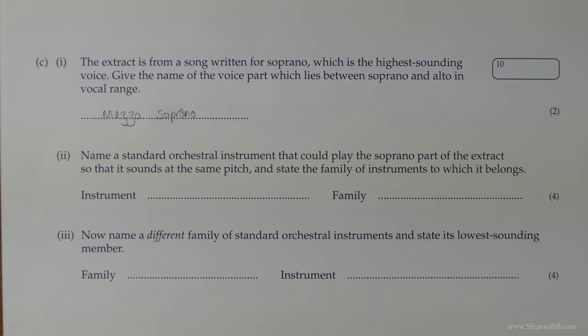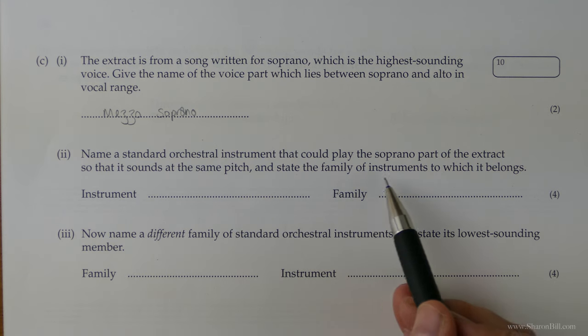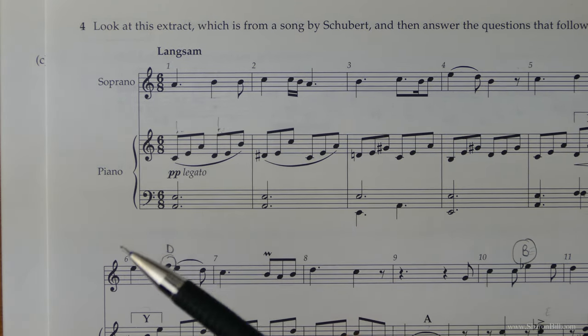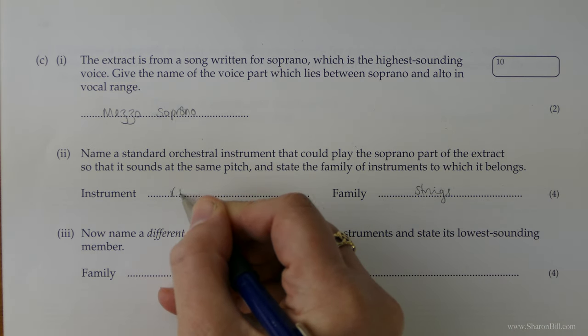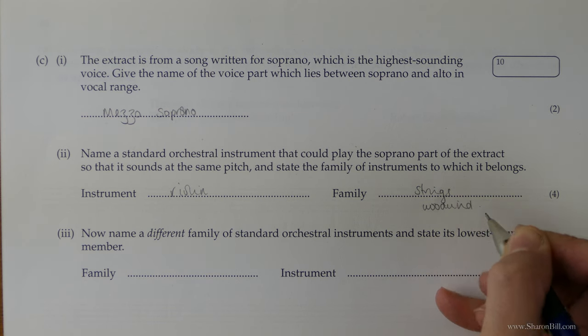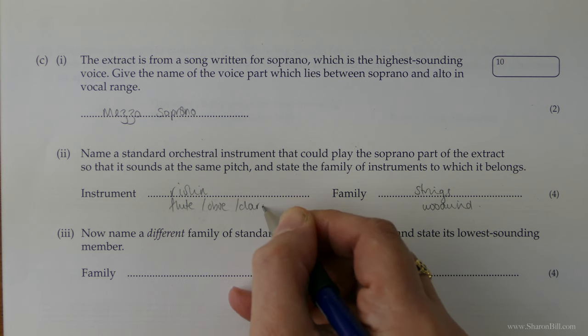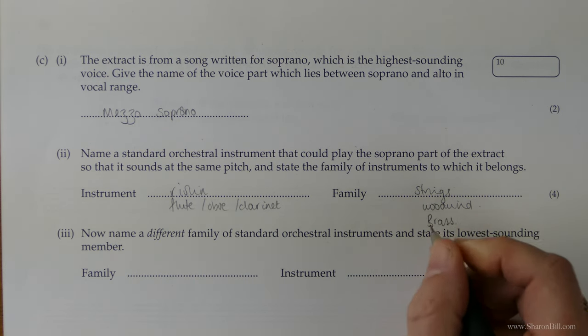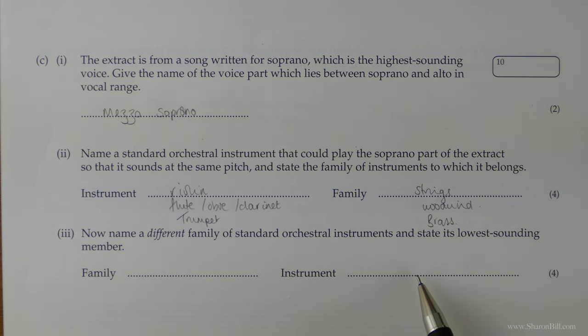A little bit more orchestral information to come. So we need to name a standard orchestral instrument that could play the soprano part of the extract so that it sounds at the same pitch. And then we need to state which family it belongs to. So we're looking for an instrument that can play comfortably in this treble clef register. So it depends. If you're choosing strings then the answer would have to be the violin. If we're choosing woodwind, we'd have to choose either flute that's a treble woodwind instrument or it could be oboe or it could be clarinet. Now then if you choose brass really the high one for that would be trumpet.